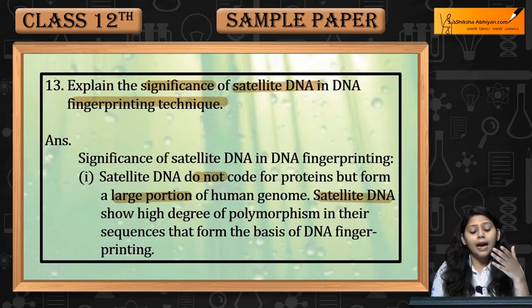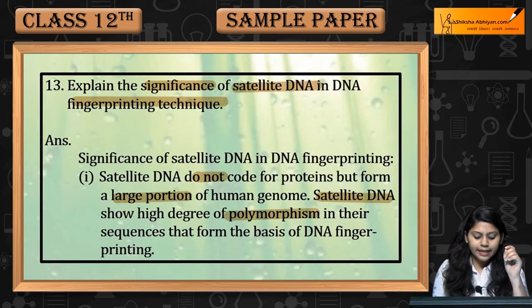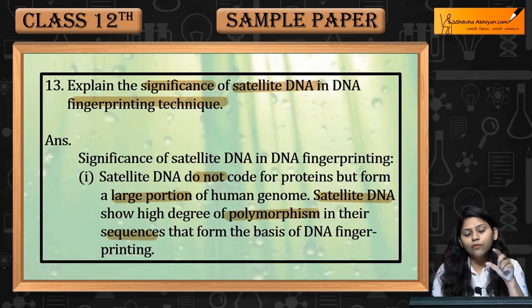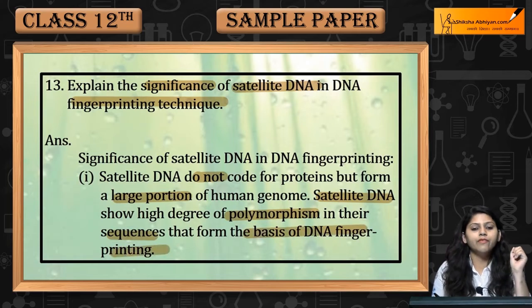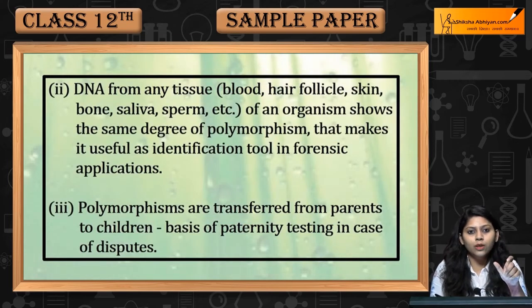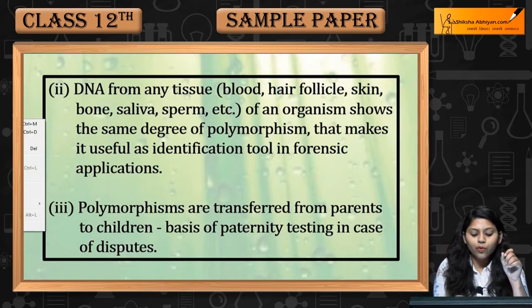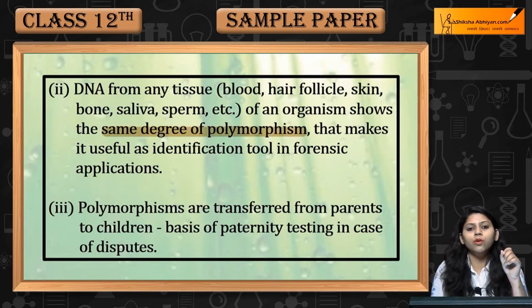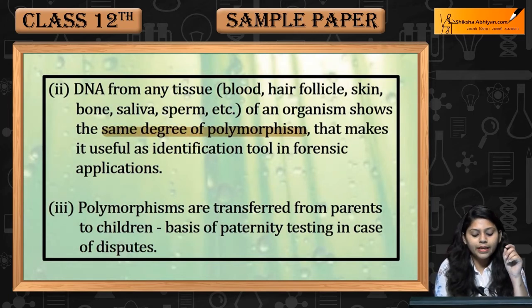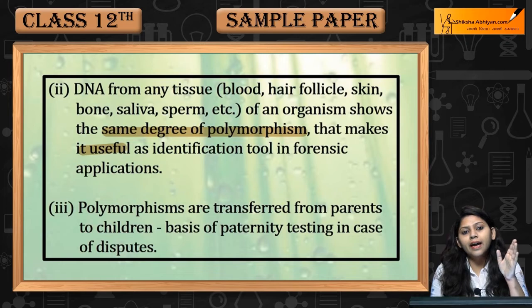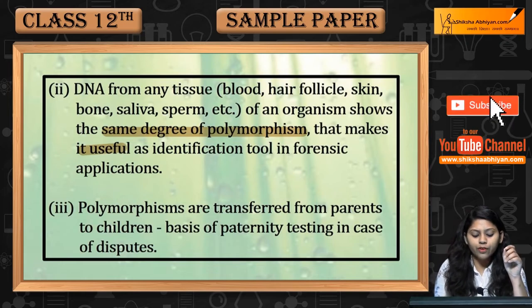Satellite DNA shows a high degree of polymorphism in their sequences. That polymorphism is the basis of DNA fingerprinting. DNA can be taken from any tissue in the body, and it shows the same degree of polymorphism, making it useful as an identification tool in forensic applications.